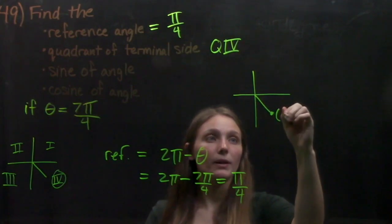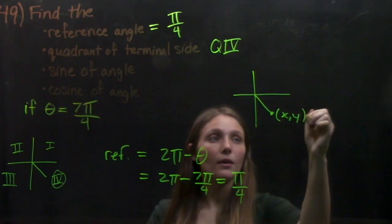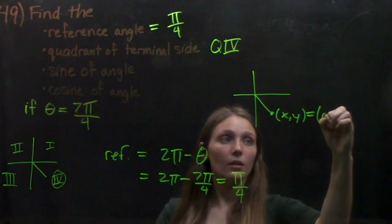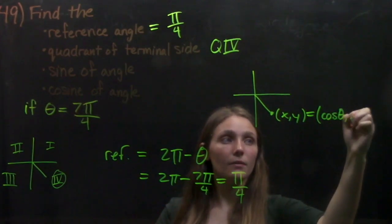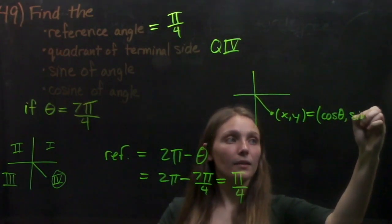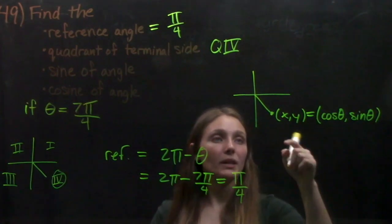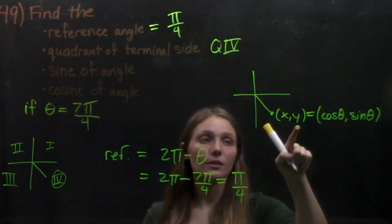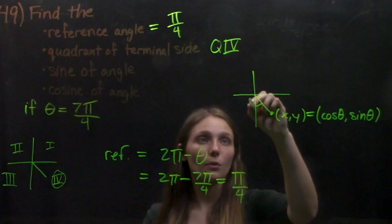We've got our point here. And on the unit circle, we have our points listed in x comma y, also in cosine of theta, comma sine theta. So all we need is the point coordinates of our 7 pi over 4 angle.